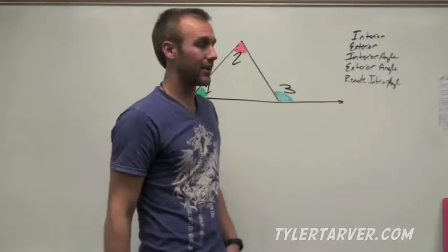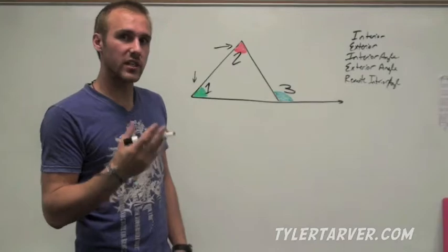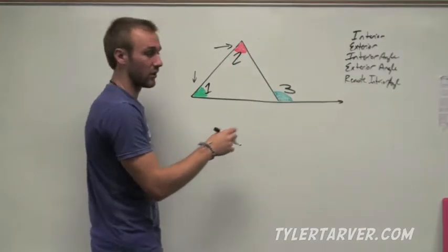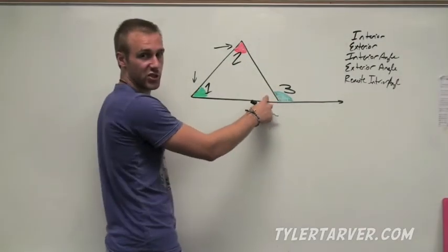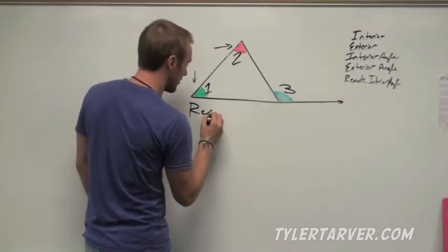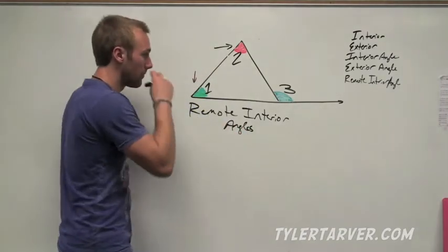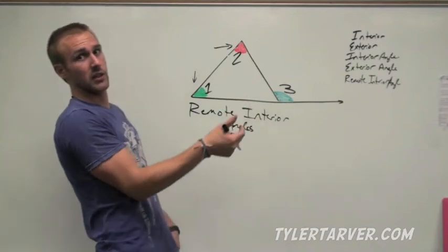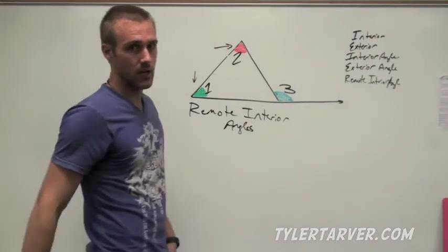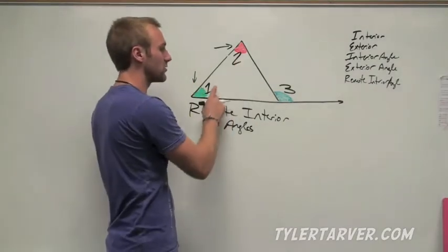Now, we also have another name. These two angles right here are called remote interior angles, because — see this exterior angle? They are the only two angles not touching it. This angle right here is right next door neighbors with it, it's adjacent to it. These two are not touching it, which makes them remote interior angles. The way some people remember that: if you're sitting on the exterior angle, you'll be laid back in your chair and you need to shoot the remote to hit the other two. It doesn't apply real great, but it's better than nothing.